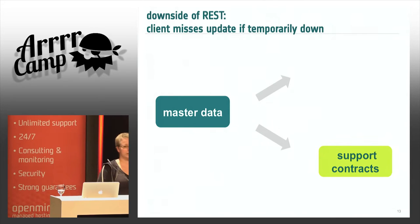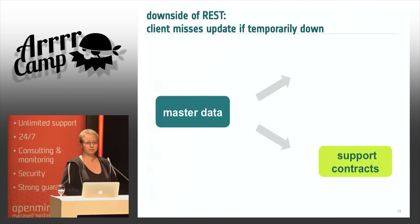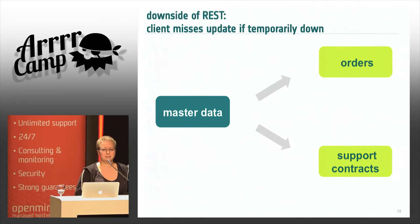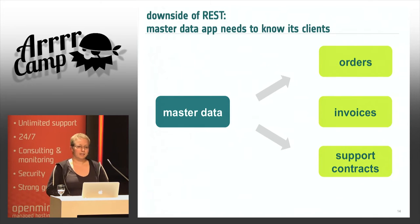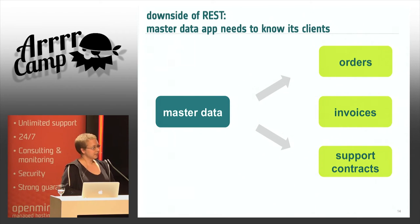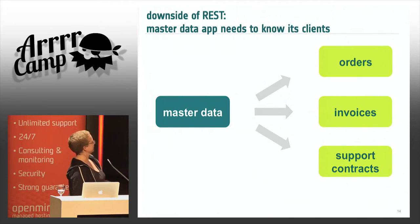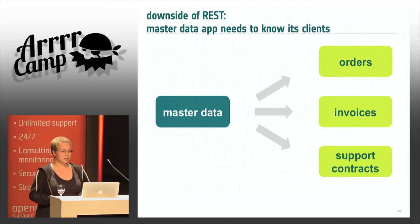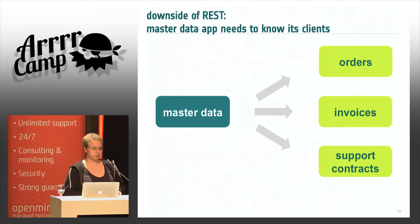If your orders application is temporarily down, the master data app will make a REST request to inform it about the customer being broke, but the request will hit a timeout. When the orders app comes back, it has missed all the important information. If you add a new application — say, one in charge of invoices — it will never learn about the business partner being broke unless you modify the master data application's code to make an additional REST request to the invoices app. This is because HTTP routes one-to-one, while what you'd prefer is one-to-many routing. So you end up with rather tight coupling of your components.